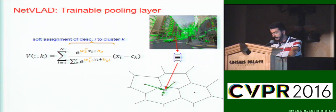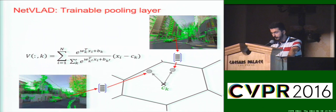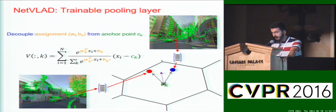Consider two local descriptors extracted from non-matching images. Under the standard unsupervised VLAD, the two image representations can be quite similar to each other as measured by the angle between the residuals, as there is no way of using the supervised information that the two images should not match. In our trainable NetVLAD layer, we decouple the assignment variables w and anchor point c, so that the anchor point can be learned to decrease the similarity between the two non-matching images, as measured by the angle between the residuals.